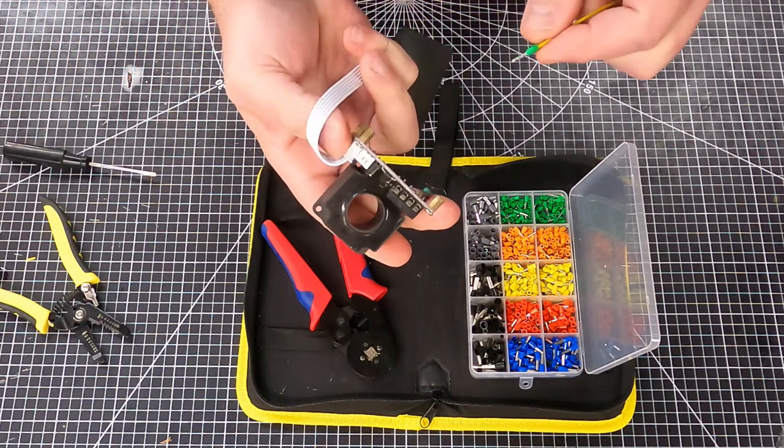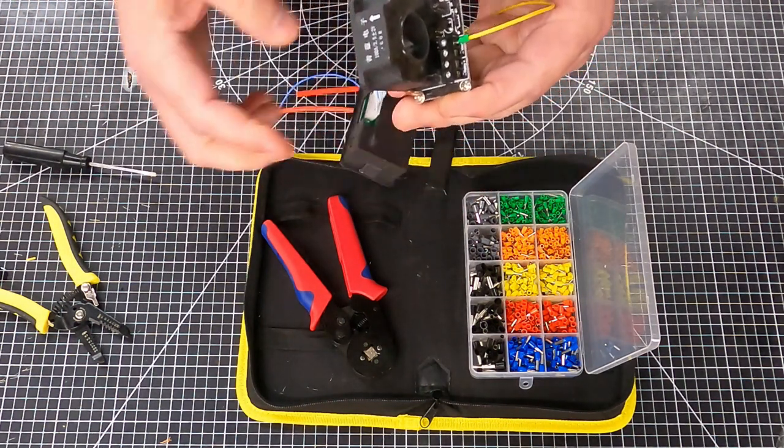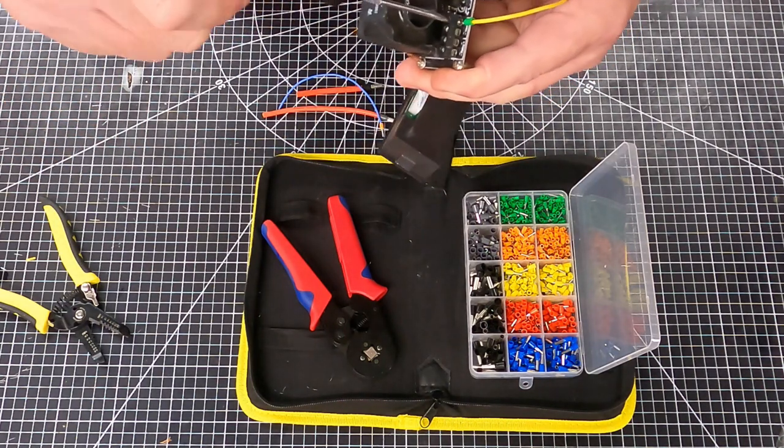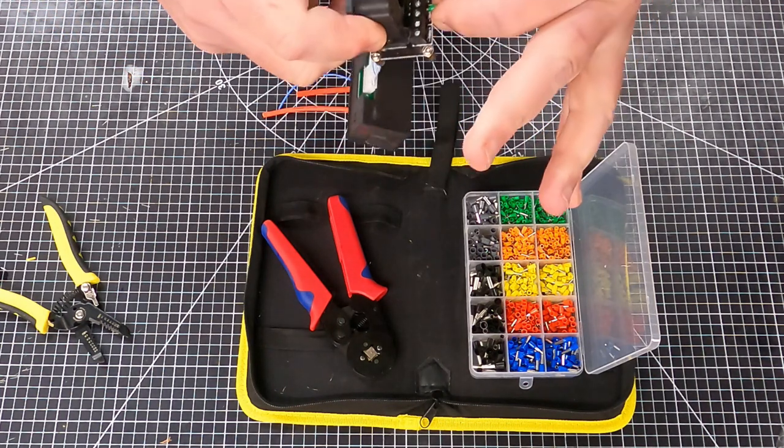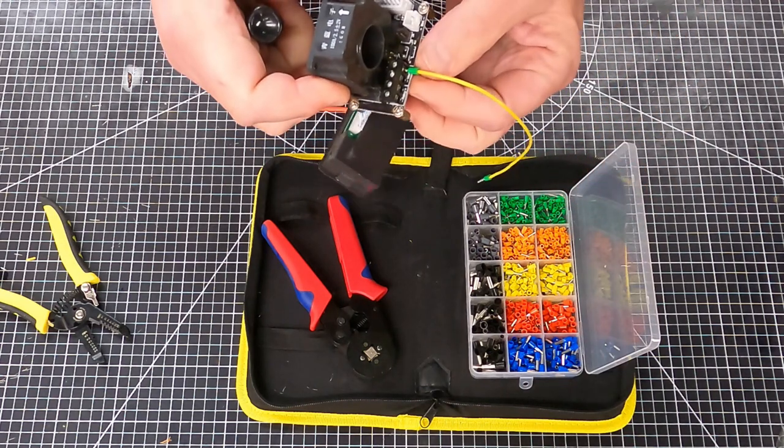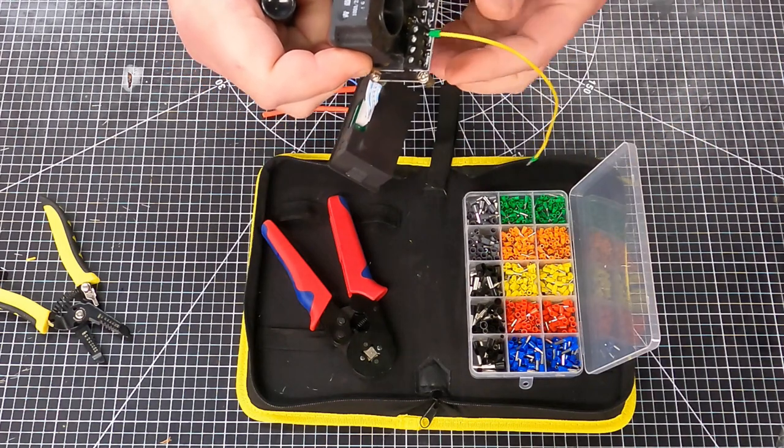You want to be able to insert that in the screw terminal and then clamp down on it with your screwdriver and get a really solid connection that's not going to come undone, not going to come unfrayed, and the wires aren't going to squish.